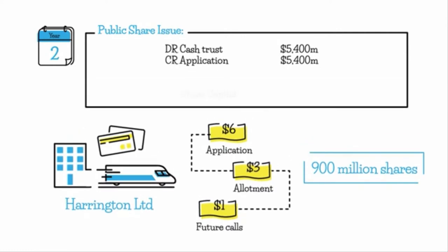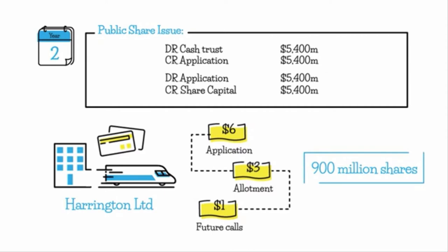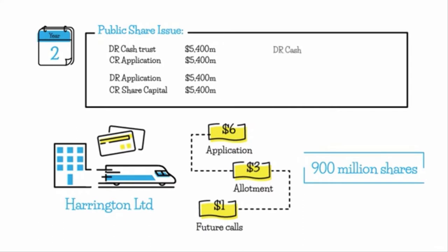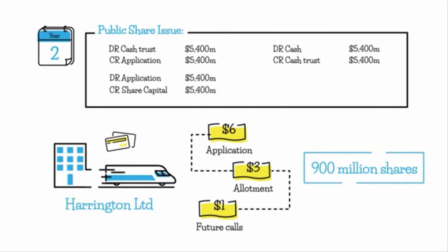We then create the share capital — the share issue was successful. We debit the application account, which represents an obligation to either issue shares or do a refund. We debit application $5,400 million and credit share capital $5,400 million — calculated as $6 on application times 900 million shares. We then release the funds from the cash trust by debiting cash and crediting cash trust $5,400 million, so the company can now spend the money on the bullet train construction.